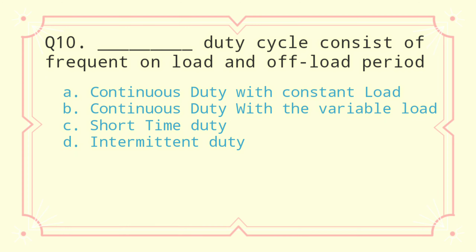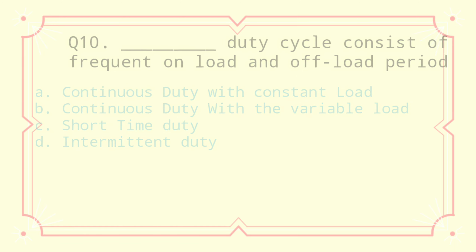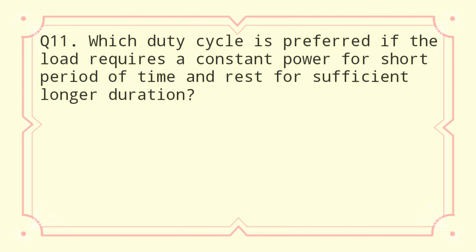Question 10: This duty cycle consists of frequent on-load and off-load periods. a) continuous duty with constant load, b) continuous duty with variable load, c) short time duty, d) intermittent duty. The correct answer is intermittent duty.